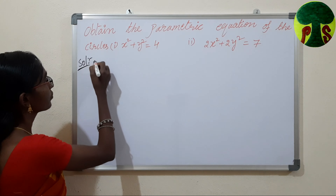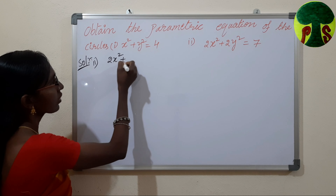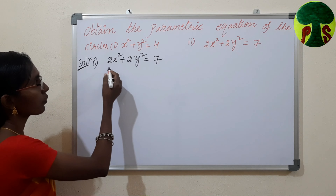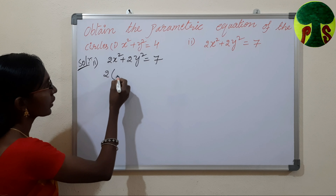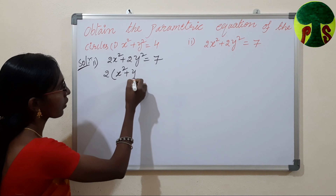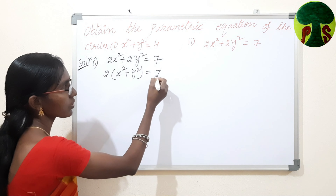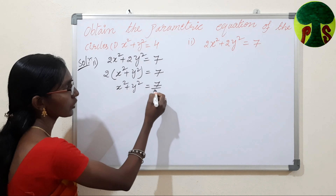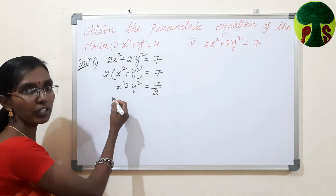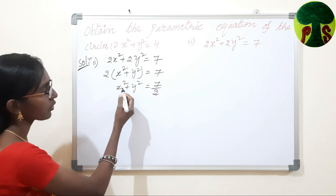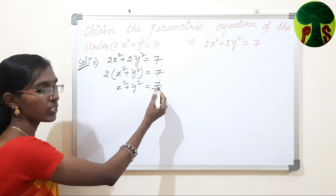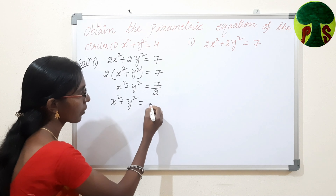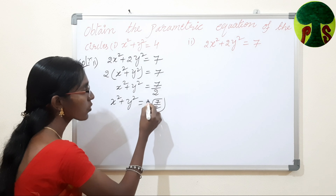Let us solve the second one. The equation of the circle is 2x squared plus 2y squared equals 7. We take 2 as common: x squared plus y squared equals 7 by 2. This is the equation of the circle. We have to convert this into x squared plus y squared equals a squared form. We get x squared plus y squared equals square root of (7/2) whole squared.